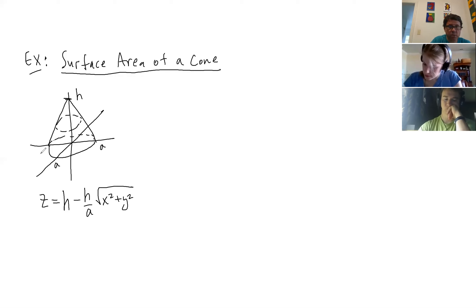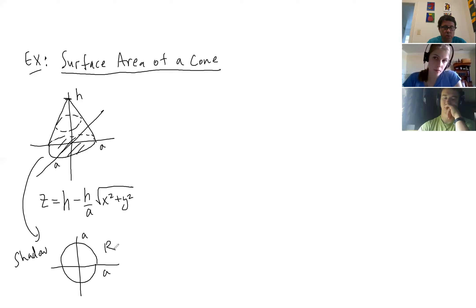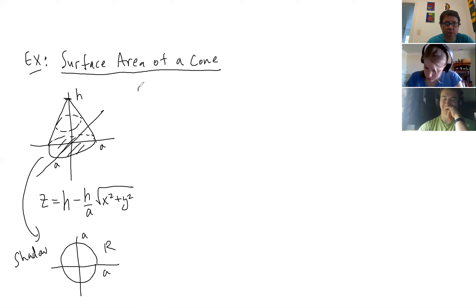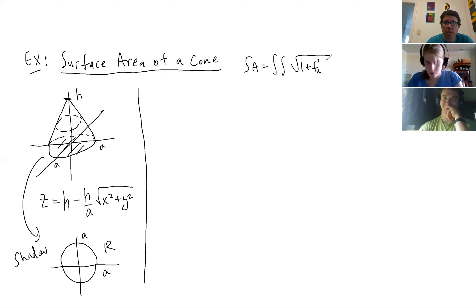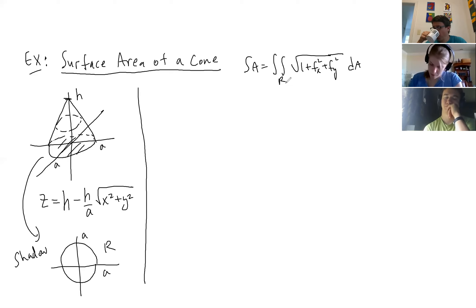The shadow region is a circle with radius a — that's the bottom of the cone. We'll want to do this in polar, but let's at least get set up. The surface area formula is the double integral of √(1 + fx² + fy²) dA. So we need to find the partial derivatives, square them, add them, add one, take the square root, and integrate over the correct bounds.